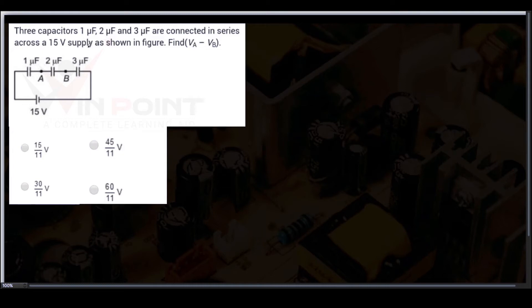Three capacitors — one microfarad, two microfarad, and three microfarad — are connected in series across a 15 volt supply as shown in the figure. Find VA minus VB.